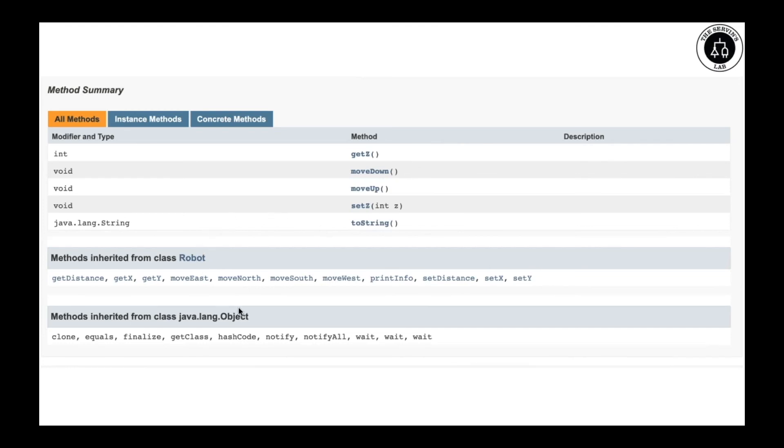And not only that, it will provide us also a description which one we inherit from the class object. You can tell right away that we don't have anymore the toString. As a matter of fact, robot doesn't have the toString. It got overridden in the class drone.